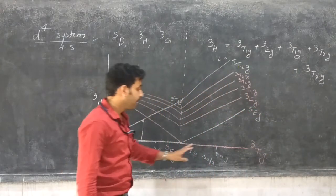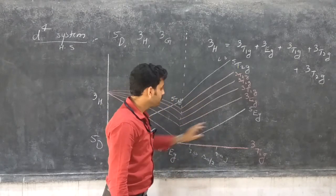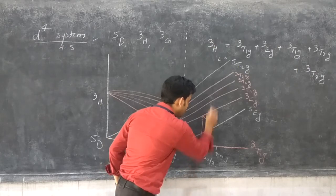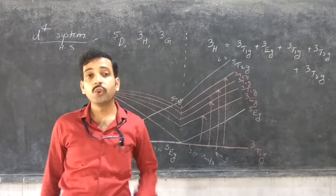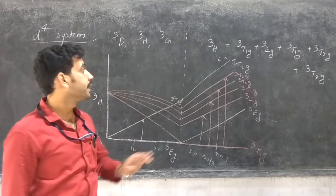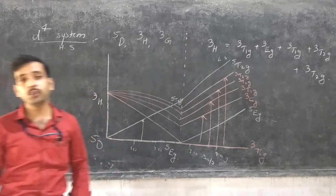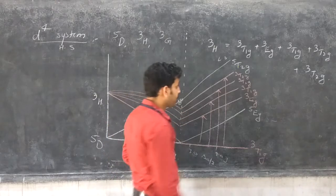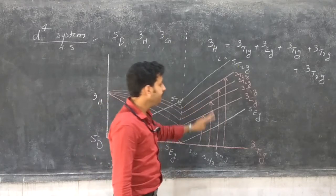There are 3 transitional lines drawn in low spin complexes in colored chalk, while high spin energies are drawn in white chalk. There are 4 transitional lines in total: 1st, 2nd, 3rd, and 4th. These 4 transitional lines are observed in the low spin D4 systems. However, 3T1G and 3T2G are overlapped to each other, meaning these 2 are overlapped, so in standard books there are only 3 transitional lines.